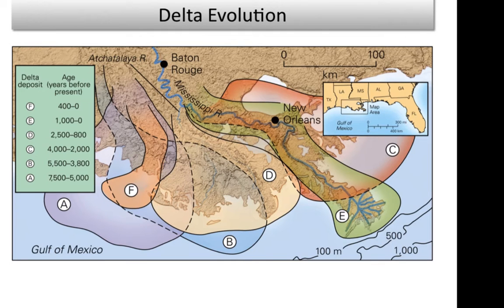One thing the book mentions is the evolution of deltas and how they can change, especially in flat regions like the Mississippi River drainage basin. Geologists have mapped out the historical delta lobes of the Mississippi River going back to about almost 8,000 years. The position of the delta has changed through time — about 7,000 years ago it was out over here.